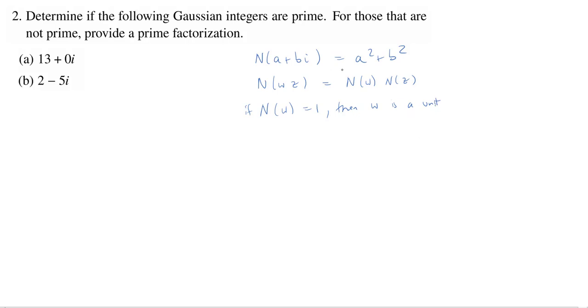For the Gaussian integers, unit is going to mean plus or minus 1 or plus or minus i. So that's going to be very helpful.